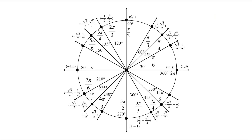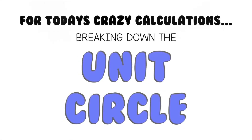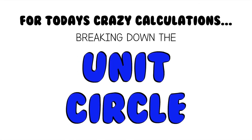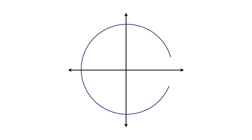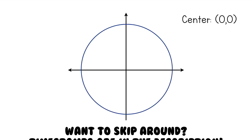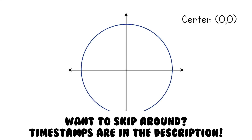This is the unit circle, and as you can see, there's a lot going on. For today's crazy calculations, we're going to be breaking down the unit circle. The unit circle is just a circle on the coordinate plane with a center at (0, 0) and a radius of 1.